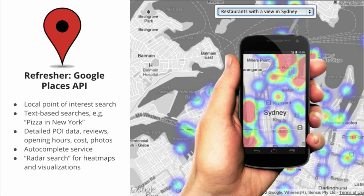You can bring in detailed information about these points of interest, like reviews, opening hours, costs, business photos, and including Zagat reviews. Since we acquired Zagat back in 2011, we've been working to incorporate those premium editorial reviews into the Places API service and allow you to leverage those reviews in your application. Another really cool feature about the Places API is the autocomplete service, which provides that type-ahead address autocomplete functionality that a lot of users have come to expect from a Google Maps service — being able to type in an address and select from a drop-down list of suggested addresses.